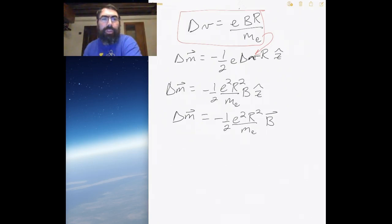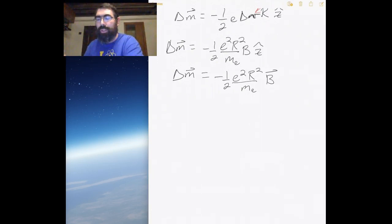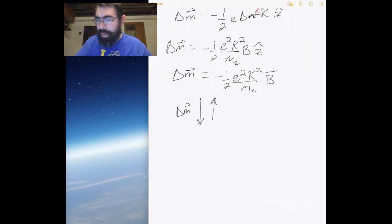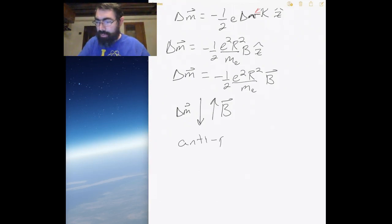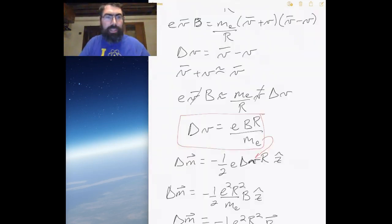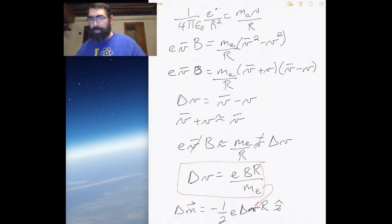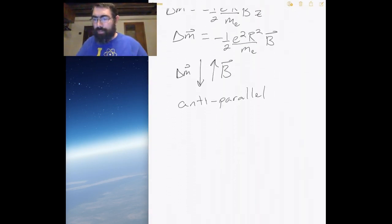Notice there is a minus sign, which tells us the change in the magnetic dipole moment is in the opposite direction to the magnetic field. So Δm is pointing opposite to B — meaning it is anti-parallel. This leads us to the conclusion that the orbital interaction gives us diamagnetism.